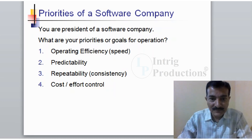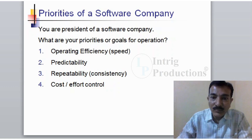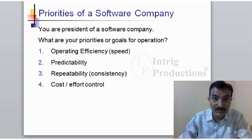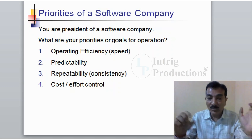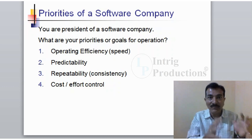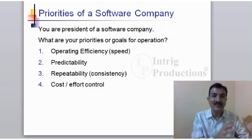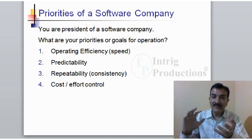If you are managing your company, what would be your priorities or goals for the operation of the company? You would want the operating efficiency to improve. You want predictability of the work, basically the software development. You want the repeatability and consistency, so that every project that you do, you are able to do it in the right time. If you decide it is a 10-day effort, then it should be done in 10 days. You want cost and efforts to be in control.